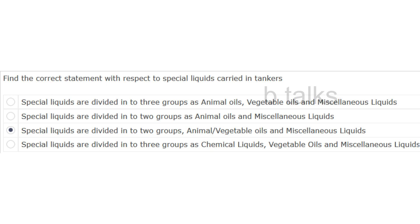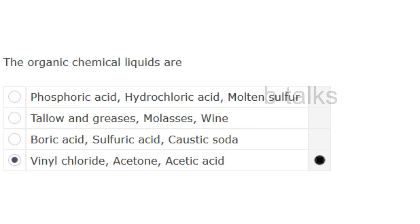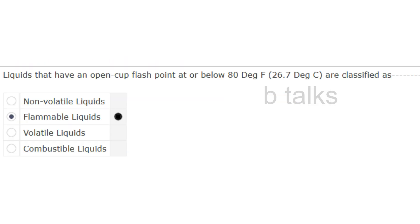Answer: Special liquids are divided into two groups, animal or vegetable oils and miscellaneous liquids. The organic chemical liquids are: Phosphoric acid, hydrochloric acid, molten sulfur; Tallow and greases, molasses, wine; Boric acid, acetone, caustic soda; or Vinyl chloride, acetone, acetic acid? Answer: Vinyl chloride, acetone, acetic acid.